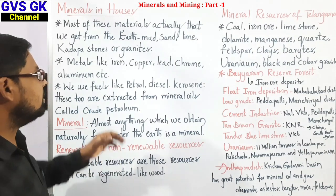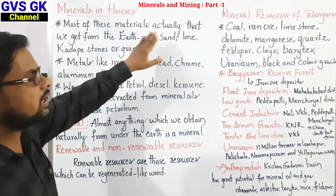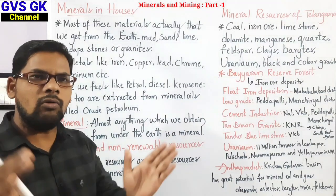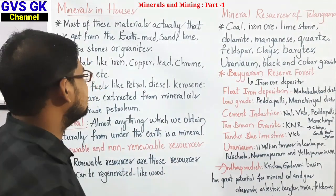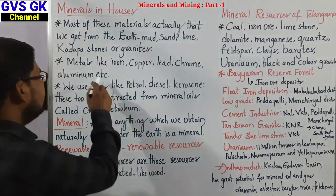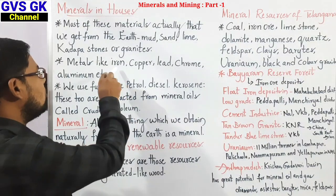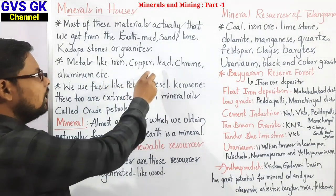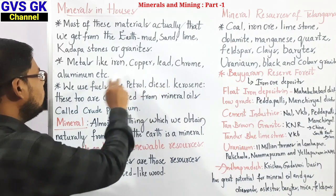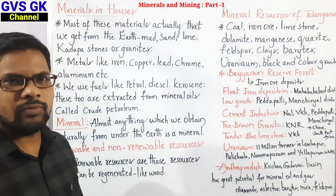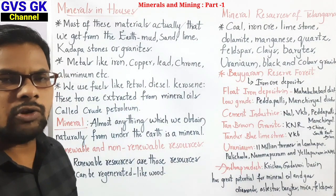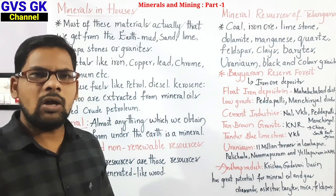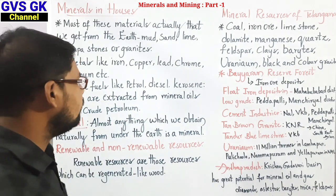These are minerals we use in our home. At the same time, if you go outside, you can see some minerals near or in your home. What are they? Iron, copper, lead, chrome, aluminum — these are also minerals you can see in your home and surroundings.